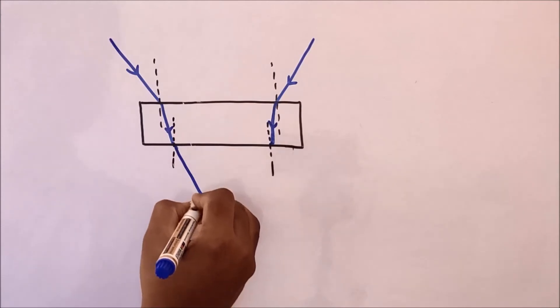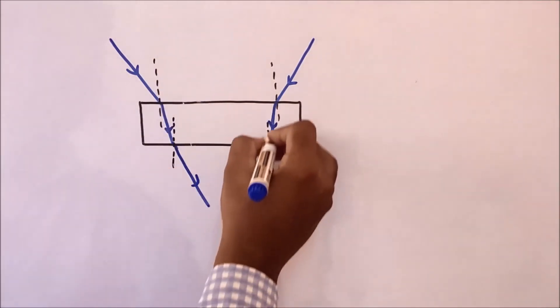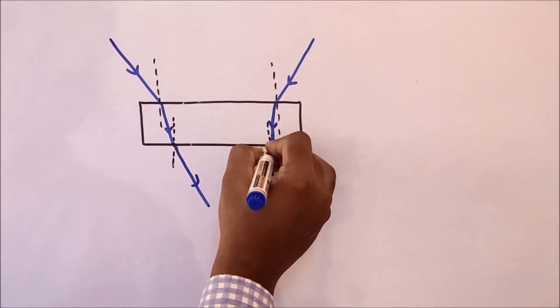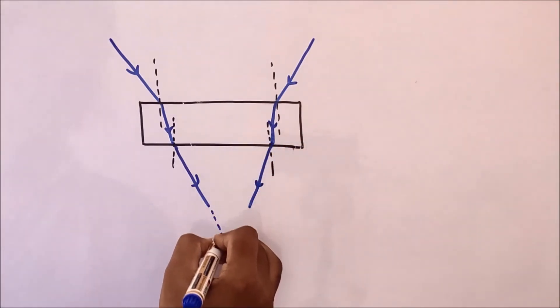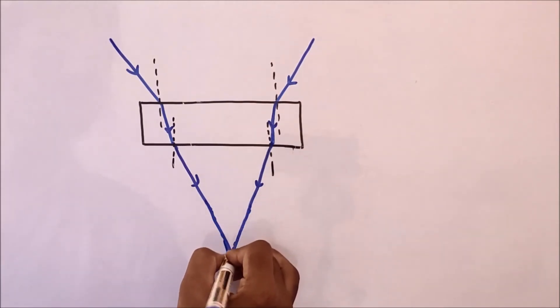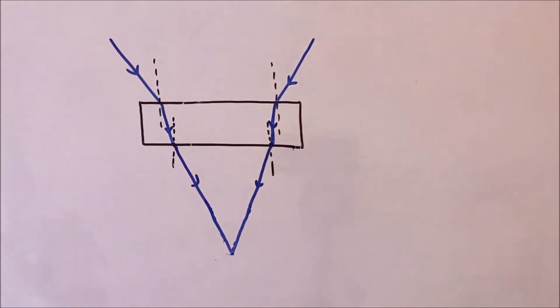Now these rays will again move away from the normal as they are coming out of the glass slab, denser medium. So somewhere they are going to meet. So this is the point where they are going to meet. Okay, roughly I am drawing with a free hand. You can draw with the help of a scale, but we do not need this diagram in the answer.